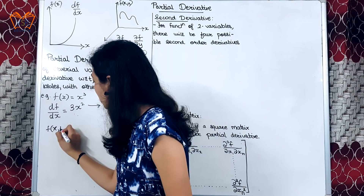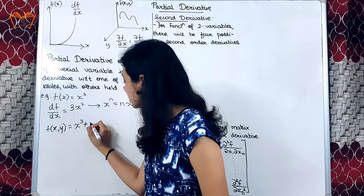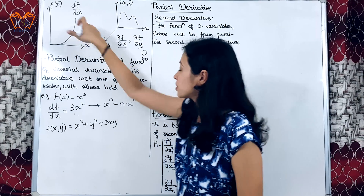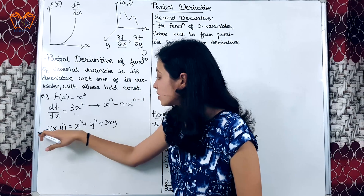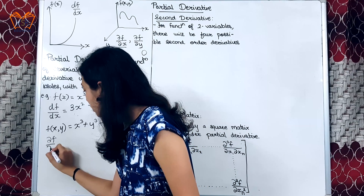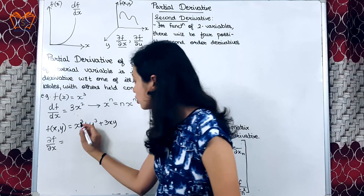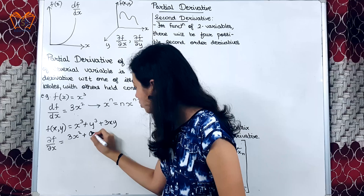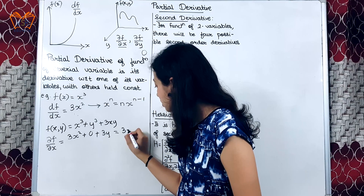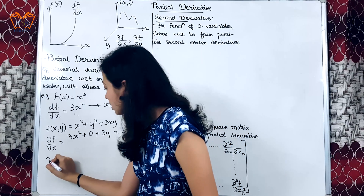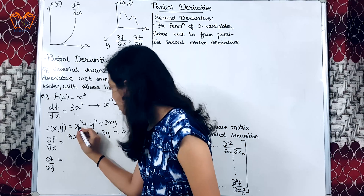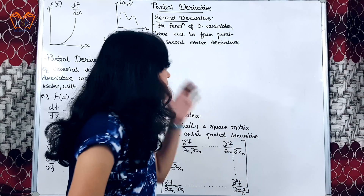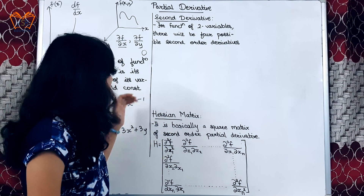Let us go for another example with a function of two variables. Consider f(x, y) = x³ + y³ + 3xy. As the function is dependent upon two variables, we will go for the partial derivative with respect to the first variable x, that is ∂f/∂x. We get 3x squared, the other variable y is held as constant giving zero, and the last term gives 3y. So the result is ∂f/∂x = 3x² + 3y. For partial differentiation with respect to y, x is held as constant giving zero, and we get ∂f/∂y = 3y² + 3x. So for a single derivative we have two combinations.